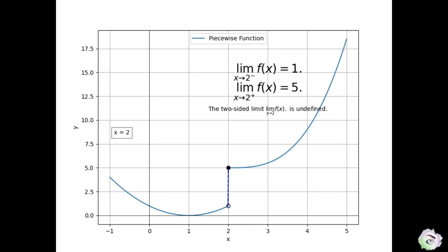Finally, let's find the function value at x equals 2. To determine this, we need to locate the point on the graph that corresponds to x equals 2 on the x-axis. Let's first identify the point where x equals 2 on the x-axis, which is shown by the red dot.